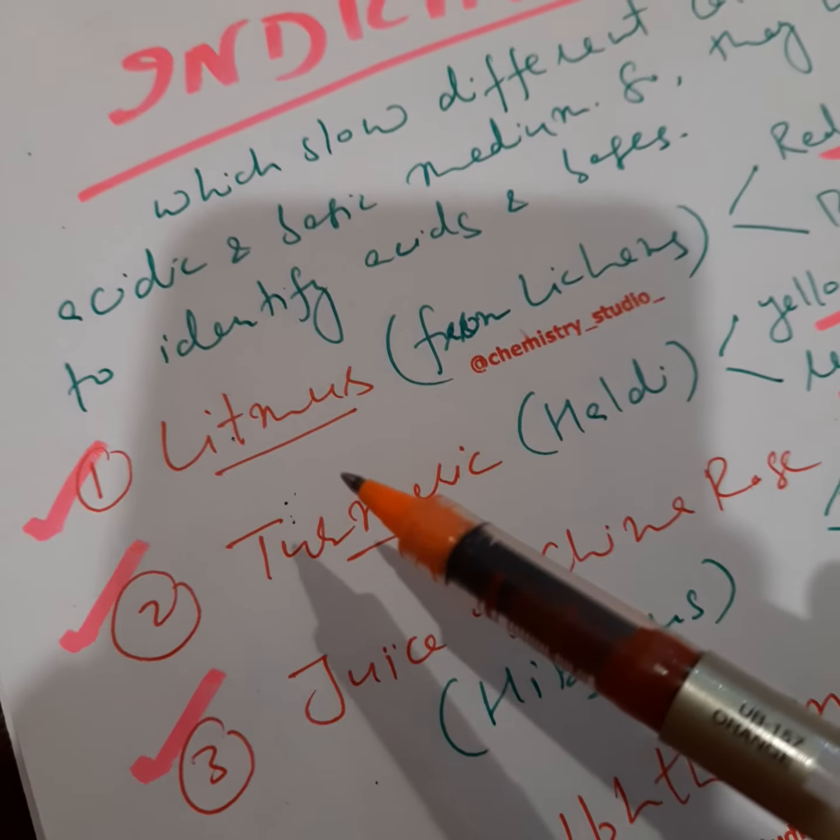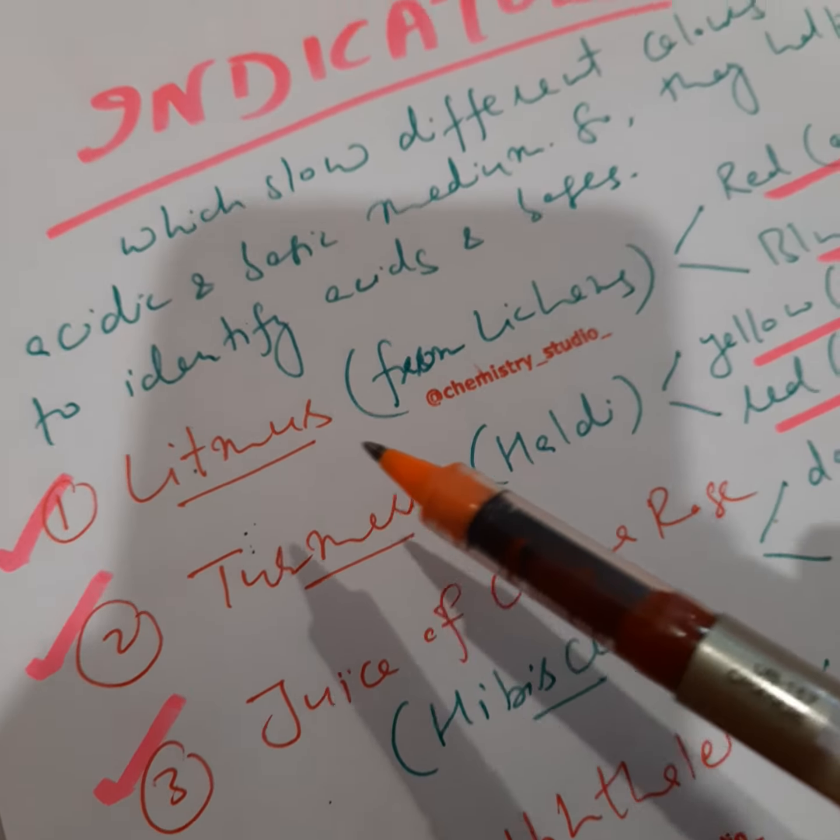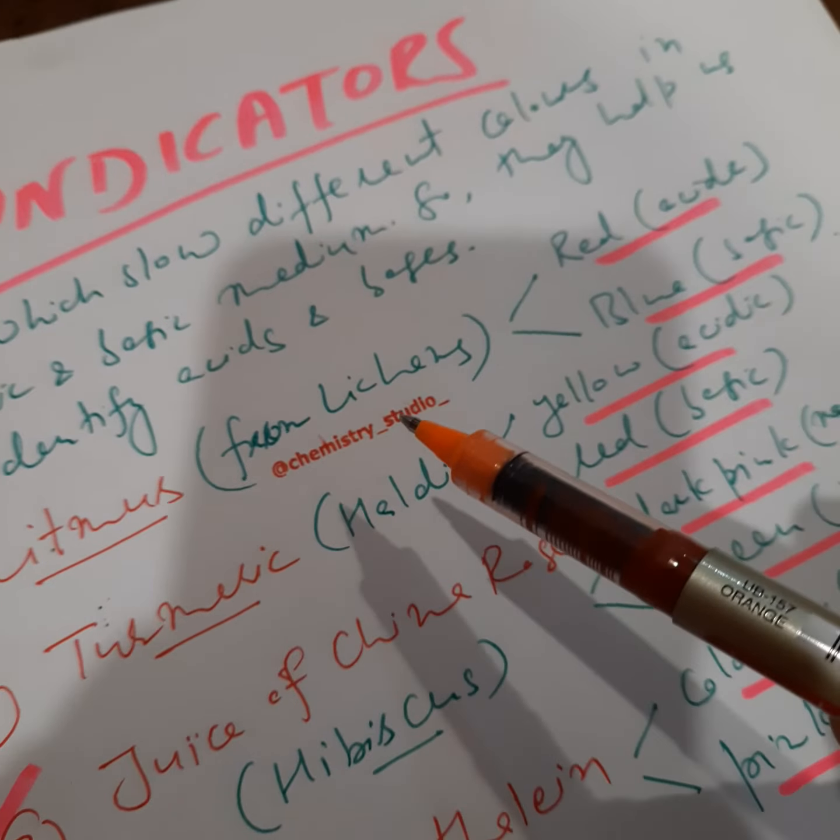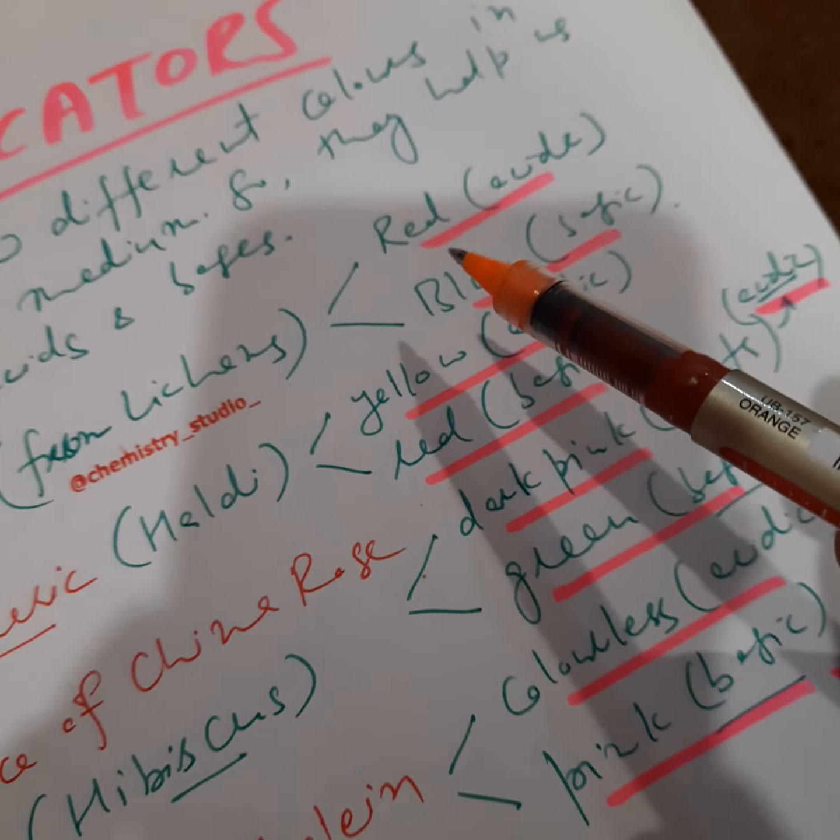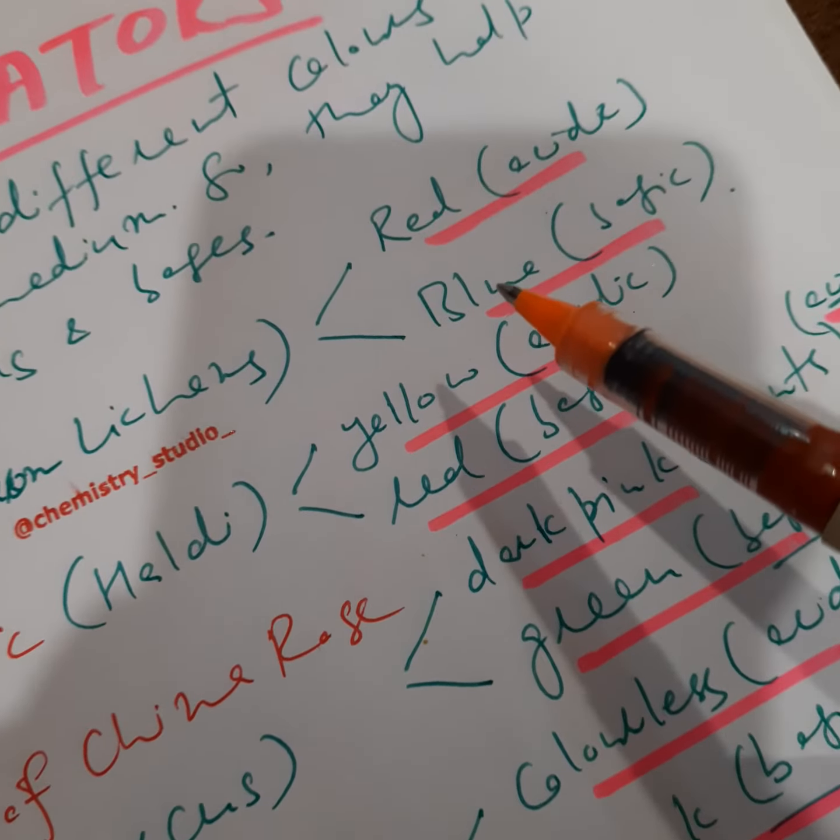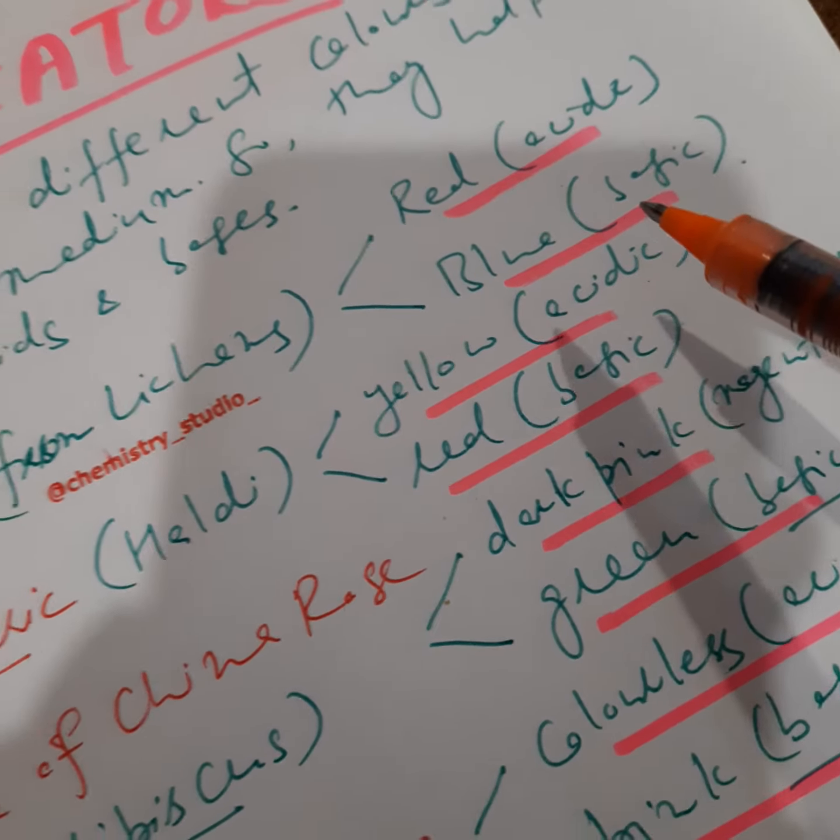The first indicator we learn about is litmus, which is obtained from lichens. It turns red in acidic medium and turns blue in basic medium.